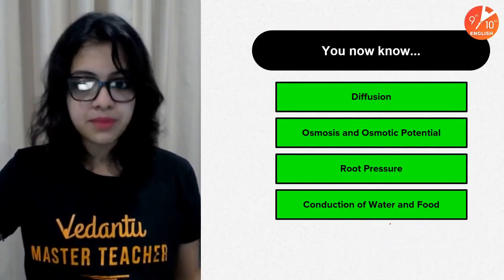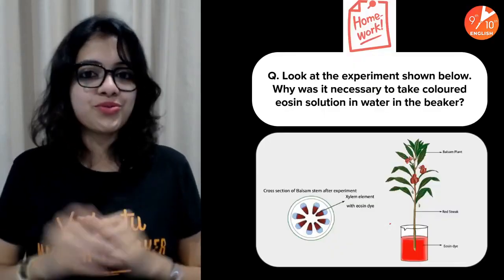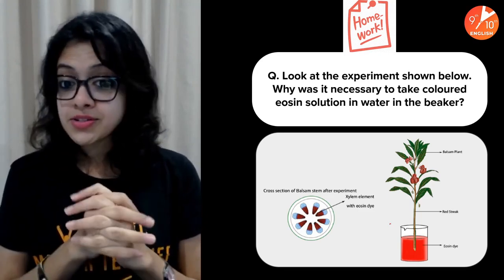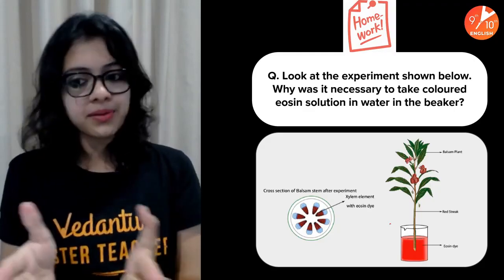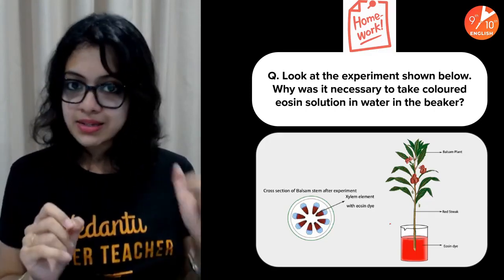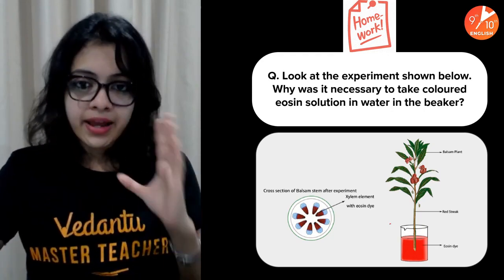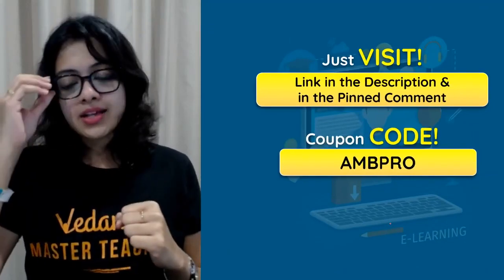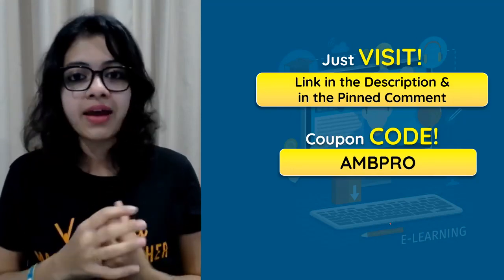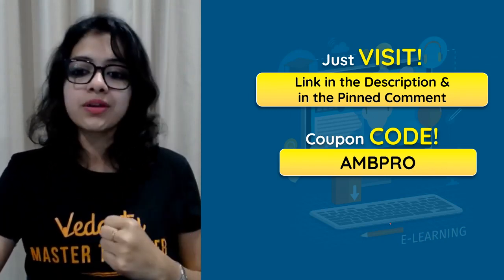We are done understanding the experiments related to diffusion, osmosis and osmotic potential, root pressure, and the conduction of water and food. The homework question is: look at the eosin experiment — why was it necessary to take colored eosin solution in water in the beaker? This is one of the most important experiments in this chapter, so understand it in full detail as it will help you recall it during exams. Remember to visit the link in the description and apply coupon code AMBPRO to avail the best discounts on Vedantu Pro.